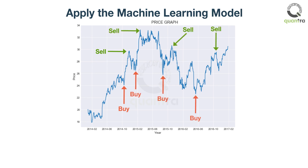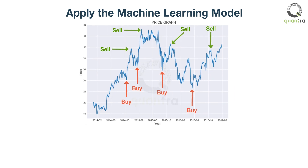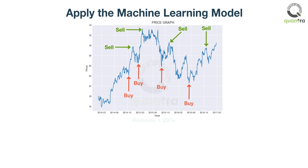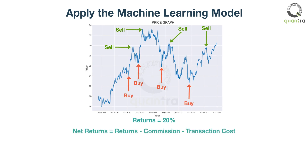The next step is to assess the returns of the strategy on historical data. You found that the strategy has given a return of 20%. But trading is not free. To get closer to realistic results, you can incorporate the commissions and transaction costs while calculating returns.